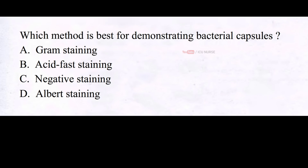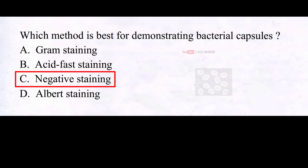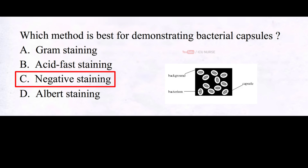Which method is best for demonstrating bacterial capsules? A. Gram staining, B. Acid fast staining, C. Negative staining, D. Albert staining. And the correct answer is C. Negative staining.